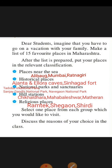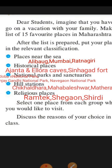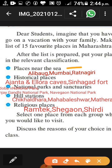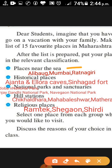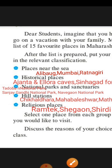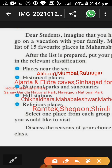Dear students, imagine that you have to go on a vacation with your family. We will have a list of 15 places and then choose to discuss how we chose. First are places near the sea — Ali Bagh, Mumbai, and Ratnagiri. Similarly, historical places: Ajanta Caves, Elora Caves, and Singhagad Fort. Then we have National Parks: Tadoba, Sanjay Gandhi, and Navegaon National Park.